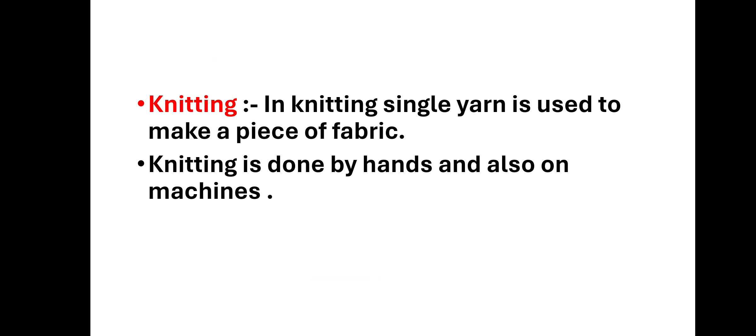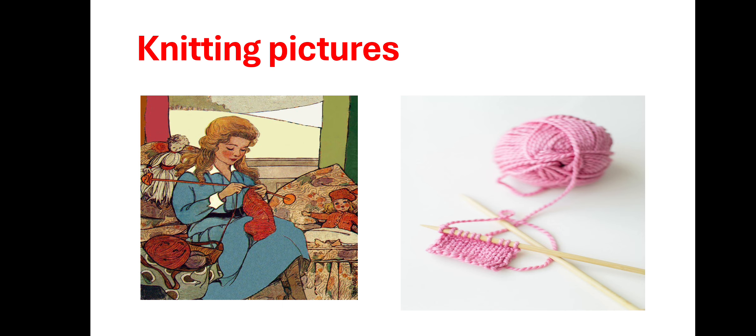And this is hand weaving. Now knitting — in knitting, a single yarn is used to make a piece of fabric। जैसे sweater इसका best example है — हम एक ही thread से पूरा एक sweater बनाते हैं thread को knit करके। Knitting is done by hands and also on machines।